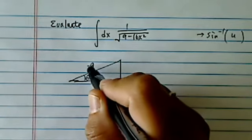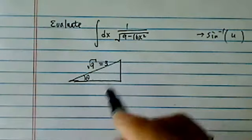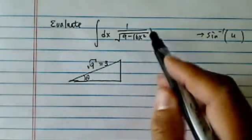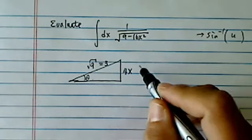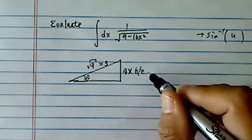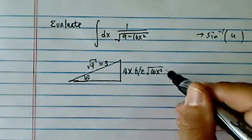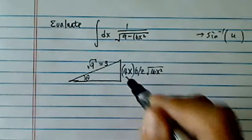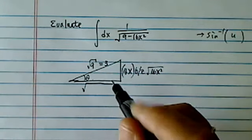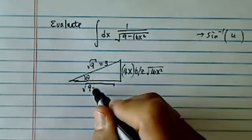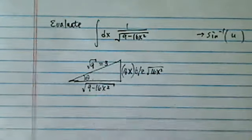I'm going to put a 9, radical 9, or 3 in there, and then I'm trying to duplicate what I have over here. I'm going to put a 4x over here because radical 16x squared is equal to 4x. Then this chunk over here becomes my 9 minus 16x squared.